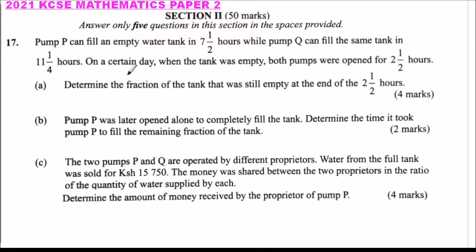So this is question number 17. We are told Pump P can fill an empty water tank in 7 and a half hours, while Pump Q can fill the same tank in 11 and a quarter hours. On a certain day when the tank was empty, both pumps were opened for 2 and a half hours. Part A: determine the fraction of the tank that was still empty at the end of the 2 and a half hours, and you get 2 marks.